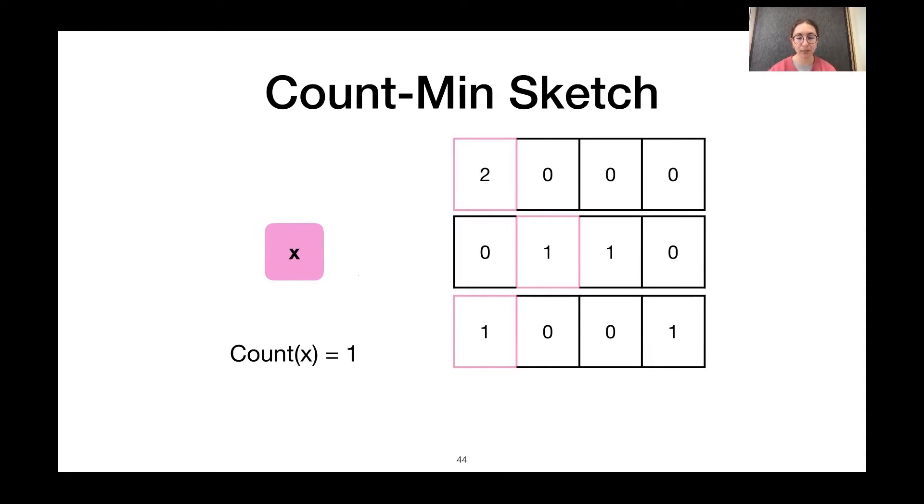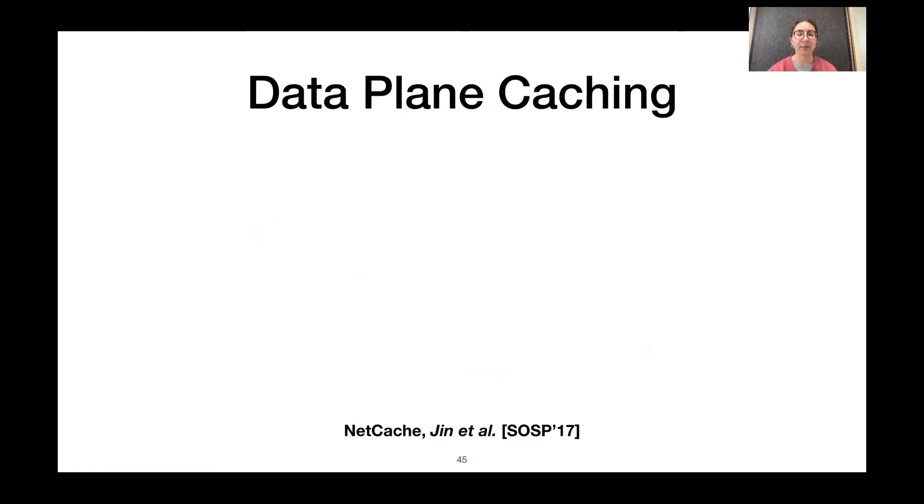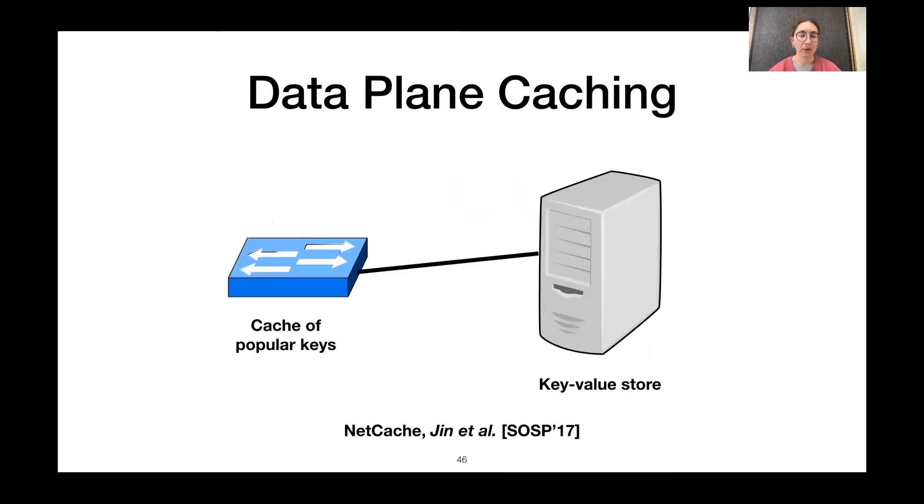And one place we can use a count sketch is in a data plane caching application. And this is based off of the NetCache application from SOSP. So, in our data plane cache, we have a switch storing a cache of the popular keys in a key value store. So, the switch sees a request for key one. If key one is not cached in the switch, the switch forwards the request to the key value store. However, if that key is cached in the switch, the switch can respond and send the value to the requester without ever having to go to the key value store.